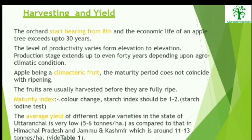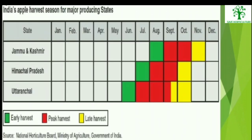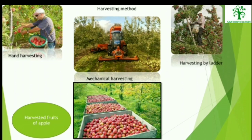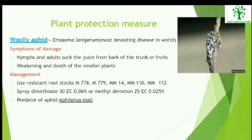Harvesting and Yield: The orchards start bearing from the eighth year and the economic life of an apple tree exceeds up to 30 years. The level of productivity varies from elevation to elevation. The production stage extends up to even 40 years depending upon the agro-climatic conditions. Apple being a climacteric fruit, the maturity period does not coincide with ripening. The fruits are usually harvested before they are fully ripened. The harvesting methods of apple include hand harvesting, mechanical harvesting, and harvesting by ladder.